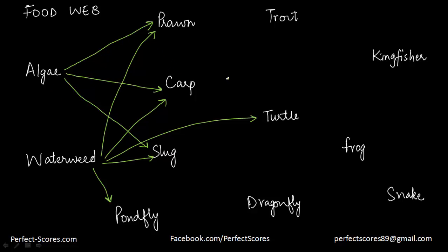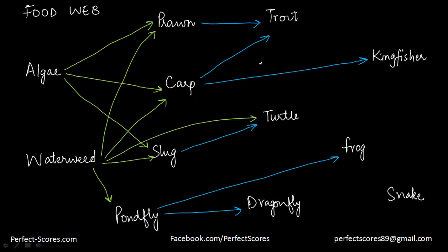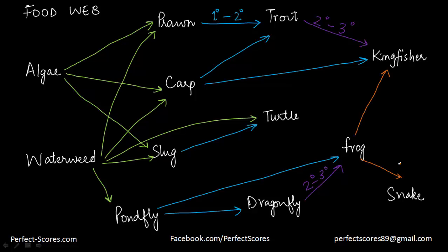The blue colored arrows represent the relationship between the first degree consumer and the second degree consumer. The prawn is taken by the trout, the carp is taken by the trout, the dragonfly and the pond fly and the frog are secondary consumers. The purple arrows show the relationship between a secondary consumer and a tertiary consumer, where the frog is taken by the kingfisher and the snake, showing the relationship between a third degree consumer and a fourth degree consumer.